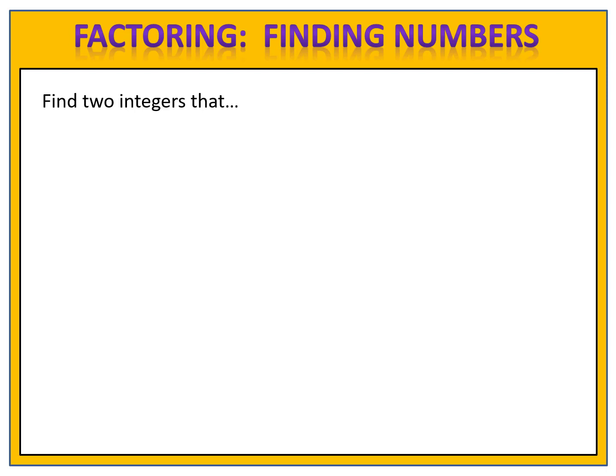In this exercise I want you to find two integers that multiply to 14 and add to 9. Perhaps you can think of your multiplication facts fairly quickly and come up with two numbers that multiply to 14 and add to 9, or perhaps you want a strategy.